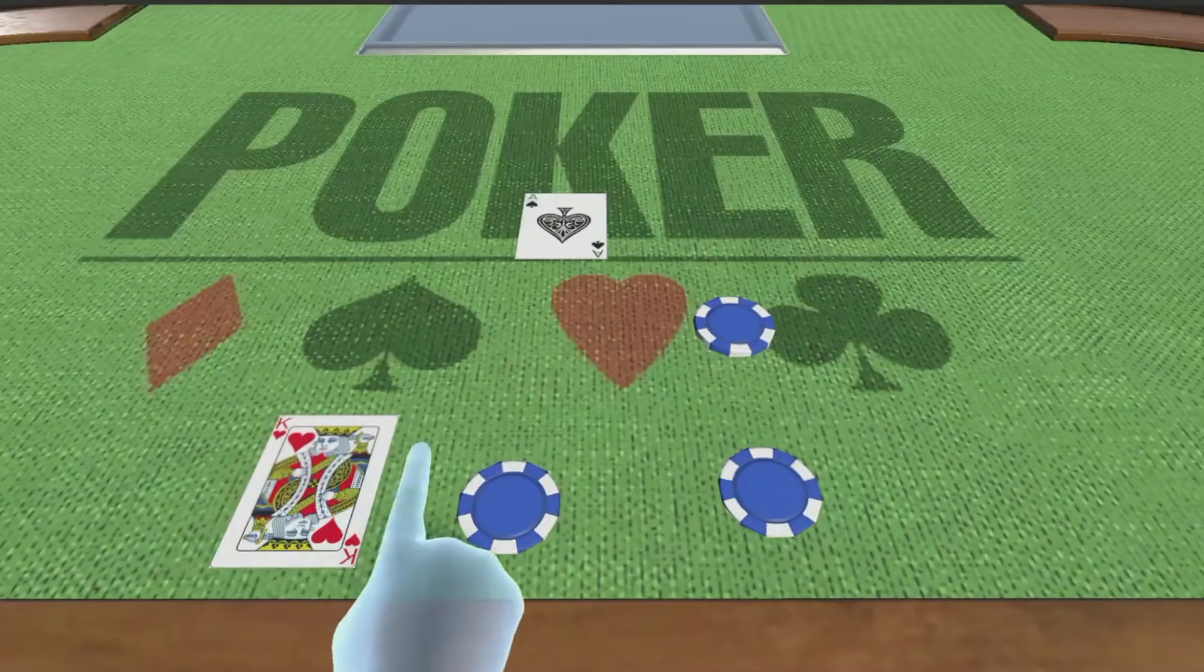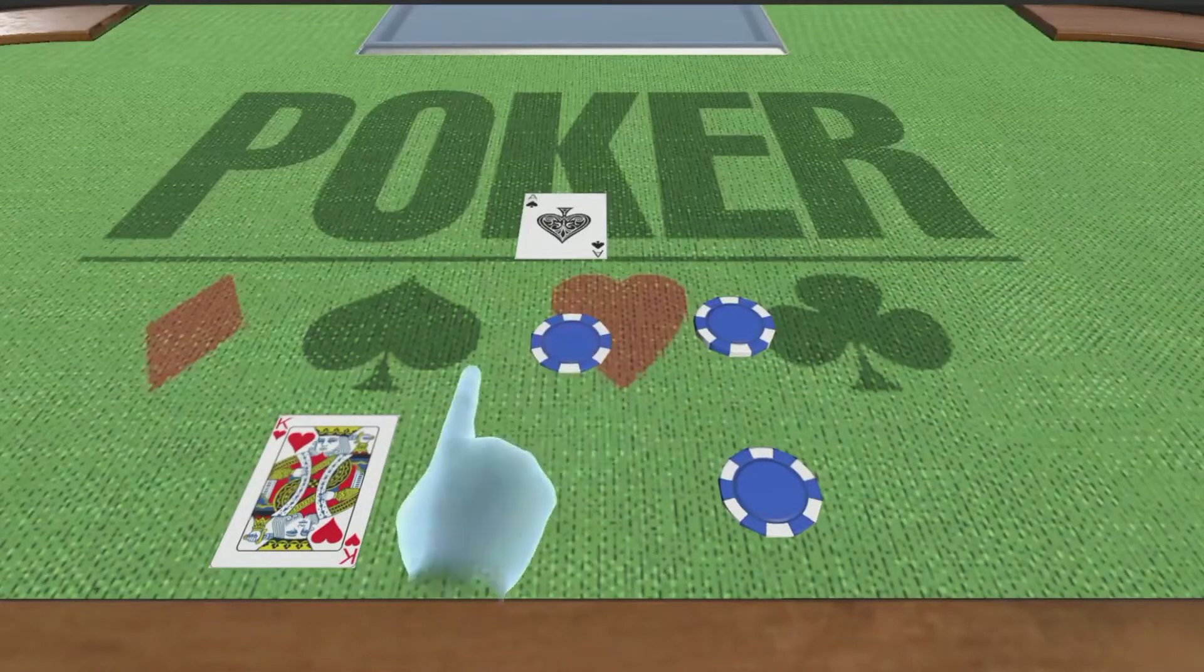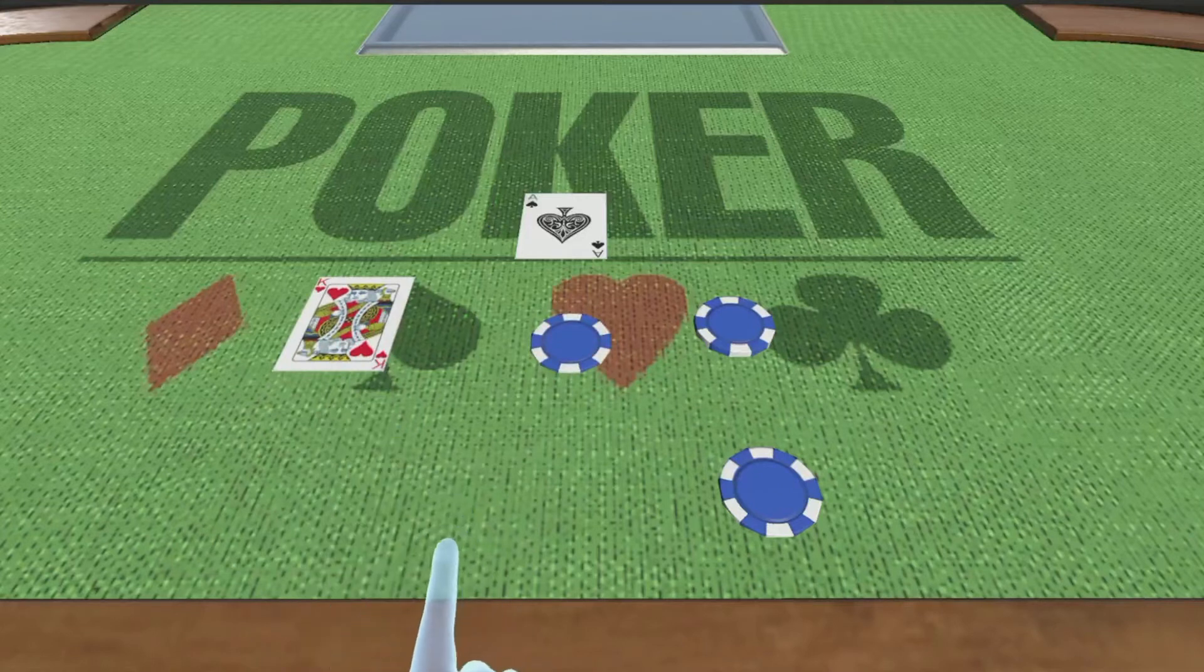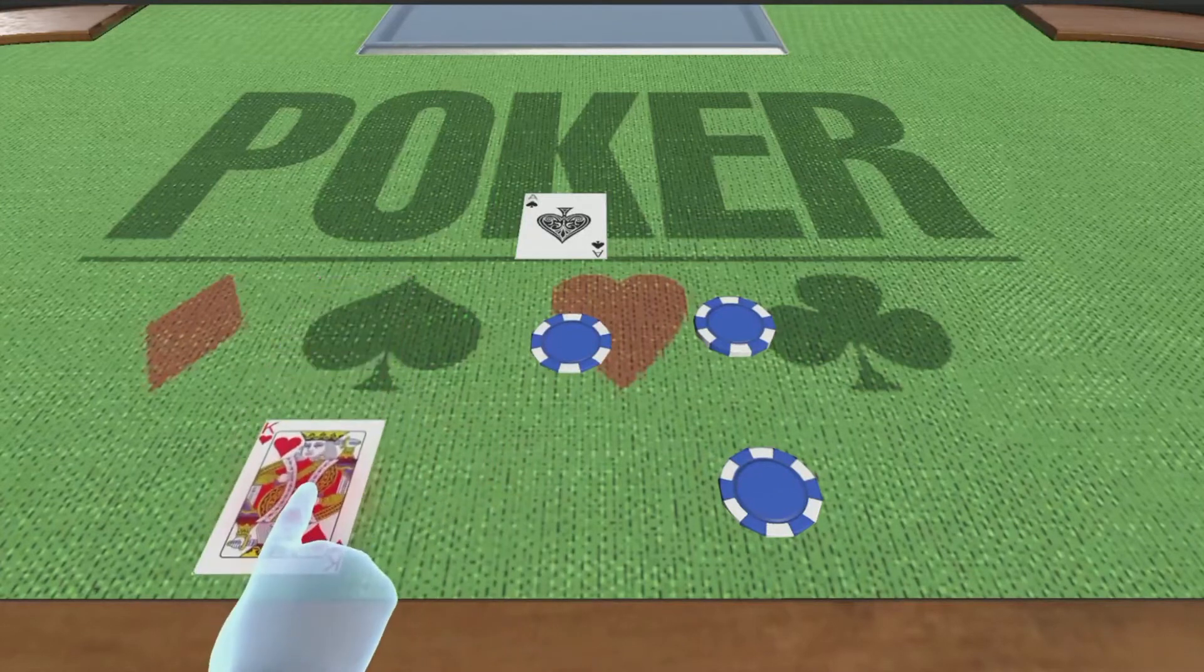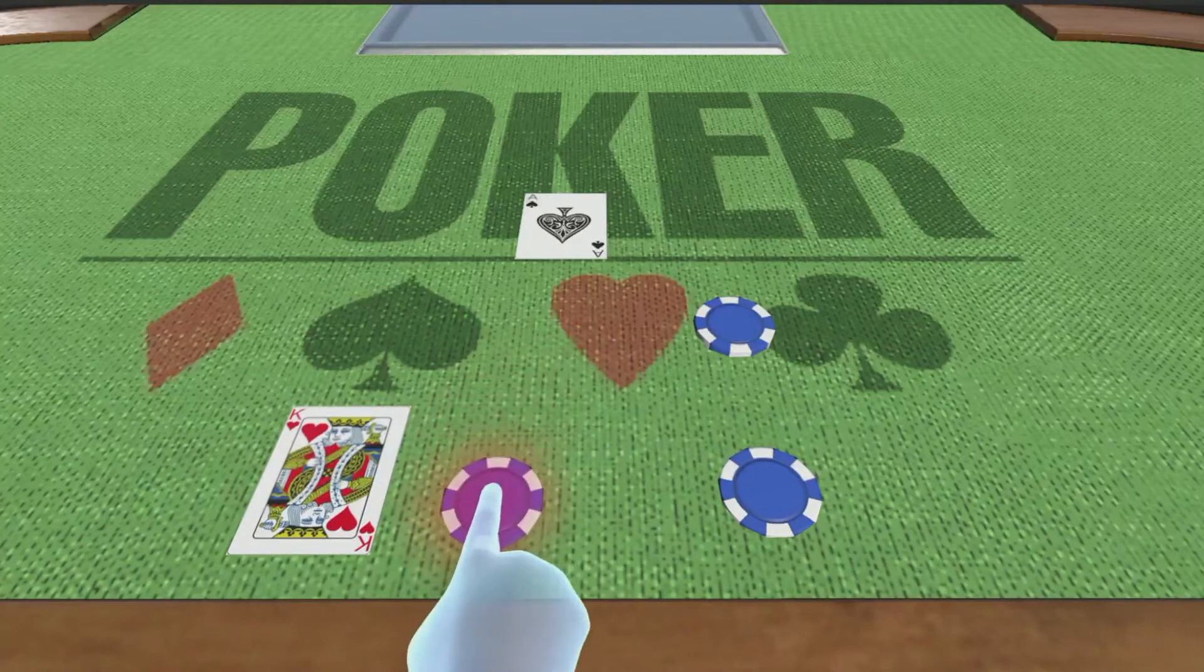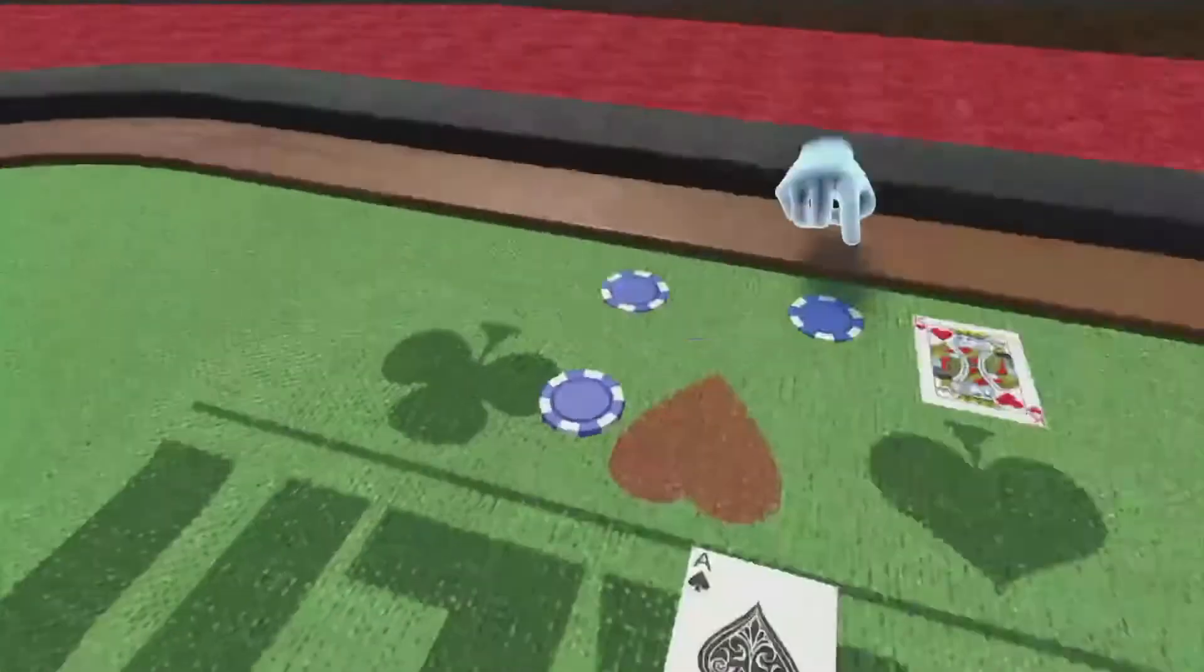Existing VR controllers only support vibro-tactile stimulation, which is limited in its ability to render different textures and shapes. What if, as you explored a virtual scene, you could feel the surfaces you touched?